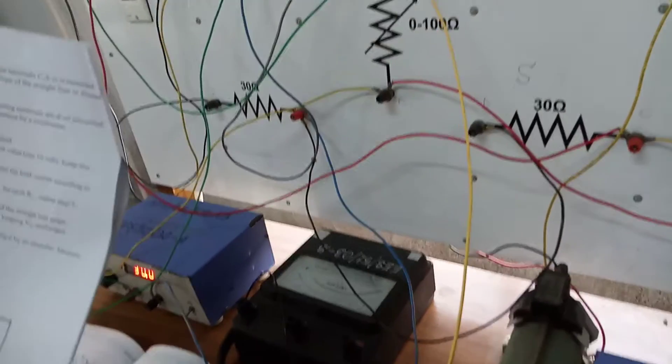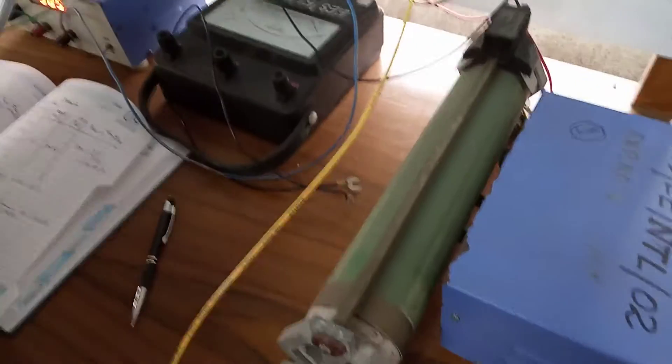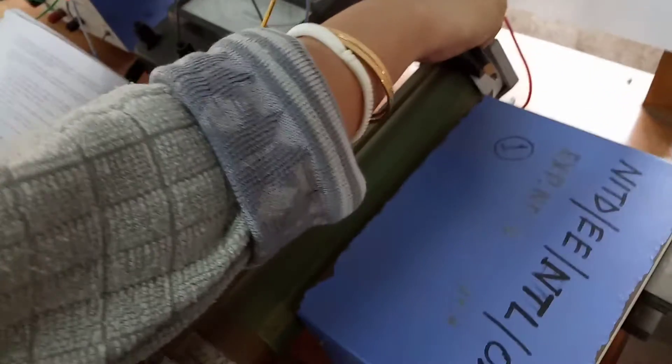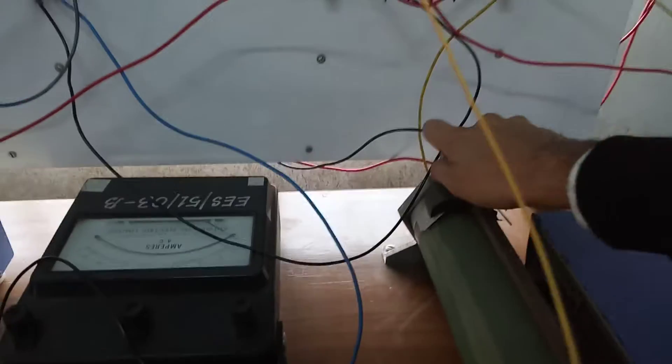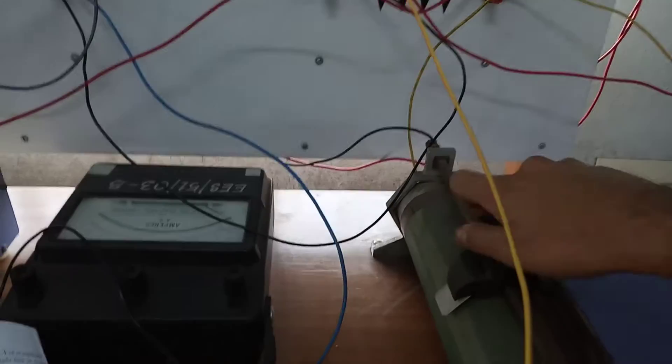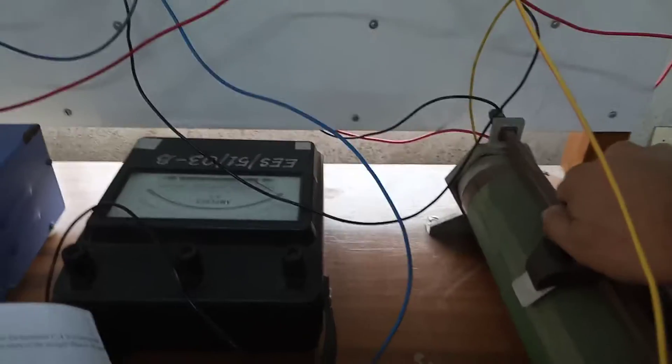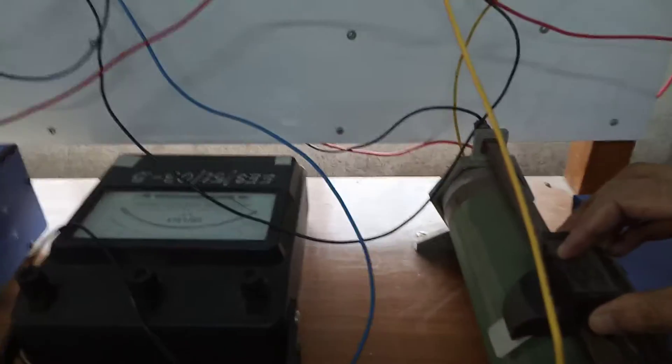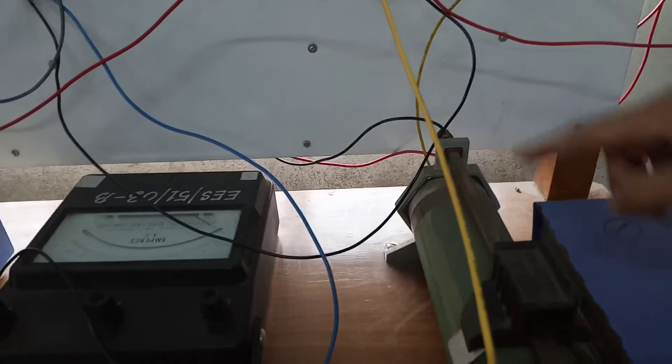Now what are the run? Run is first, we will set the rheostat at a particular value. Say we are keeping this at 50% value. It is almost 50%. And it is a 100 ohm resistor, and we are at the 50% position, means approximately our RL has to be around 50.